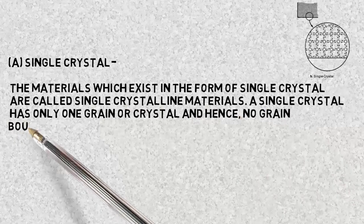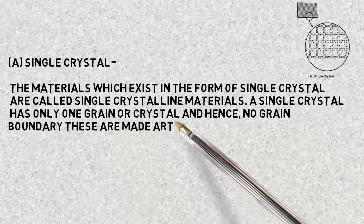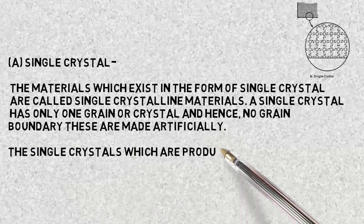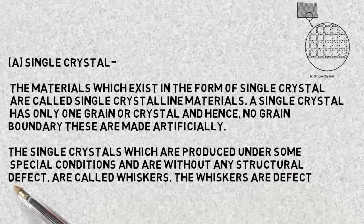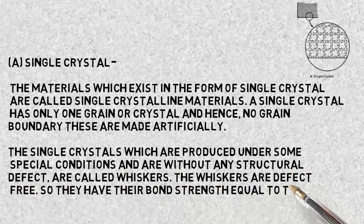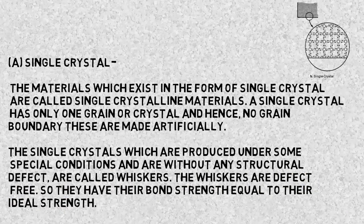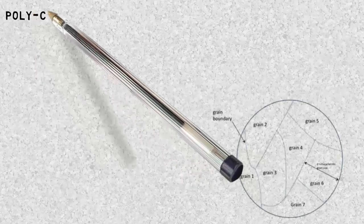These are made artificially. Single crystals which are produced under special conditions and are without any structural defect are called whiskers. Whiskers are defect free and so they have their bond strength equal to their ideal strength.